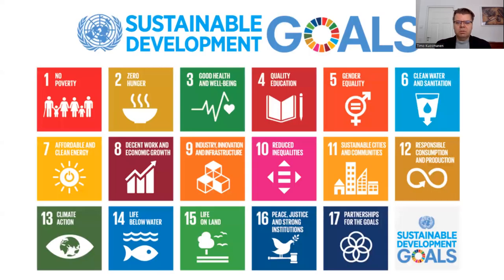What are these 17 SDGs more specifically? I have it on this specific slide. If you keep in mind the three pillars of sustainability — the social, economic and environmental — then we can think of the first row. Goals one to six can be thought of as goals towards social sustainability. These include: no poverty, zero hunger, good health and wellbeing, quality education, gender equality, and clean water and sanitation.